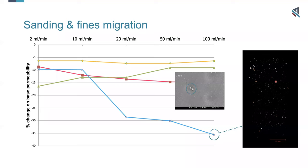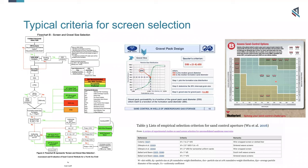Once sanding has been predicted, we come on to thinking about what to do about it — what are the criteria for sand control selection? In our last webinar we ran a poll, and Jennifer's going to throw up a poll here. What I'd like to ask anyone who's had interaction with sand control before: what criteria have you seen sand control being selected by? Is it just PSD? PSD plus formulas or rules of thumb? Sand retention testing? Or something more advanced? I'm going to pause for a second to give everyone a chance to vote.